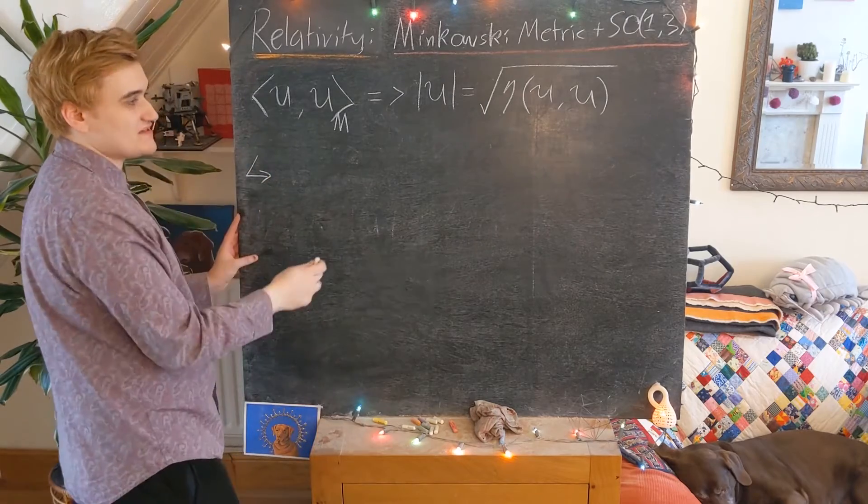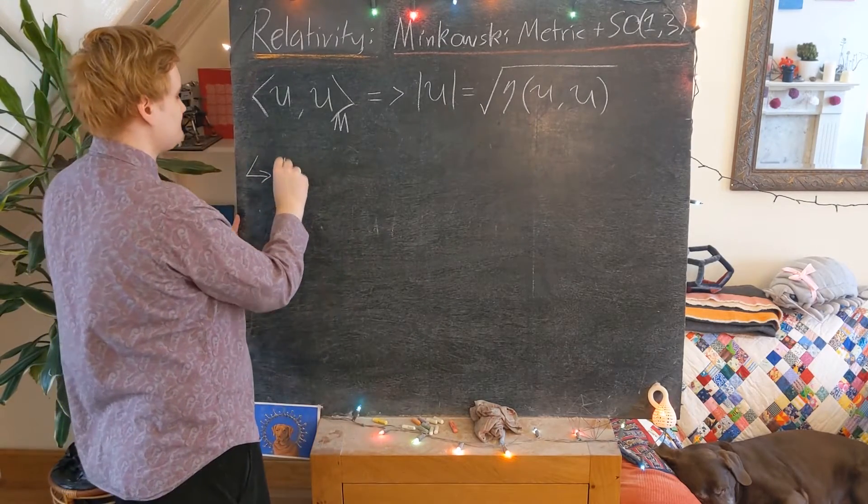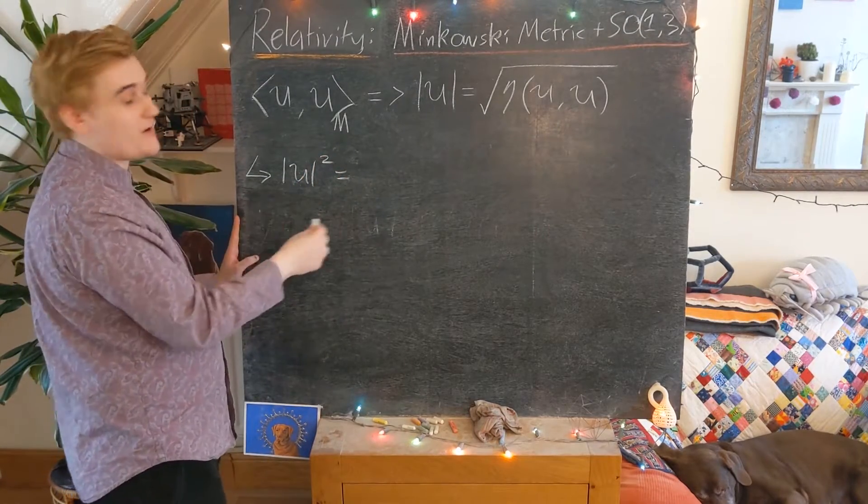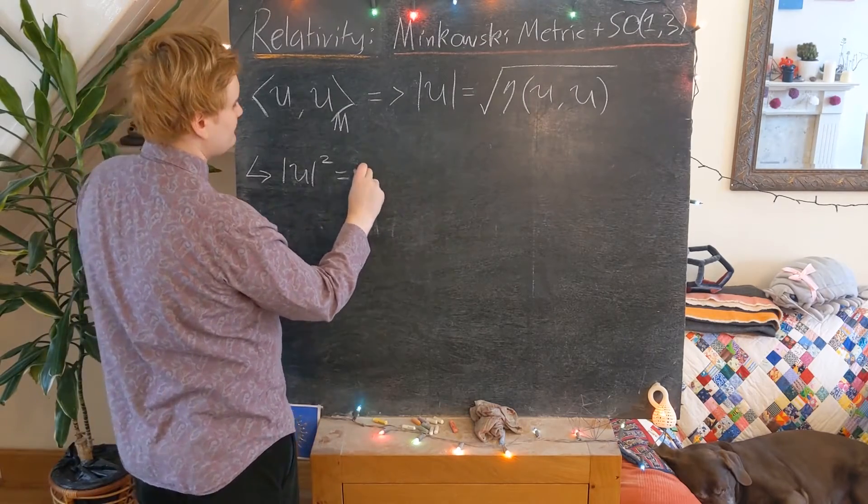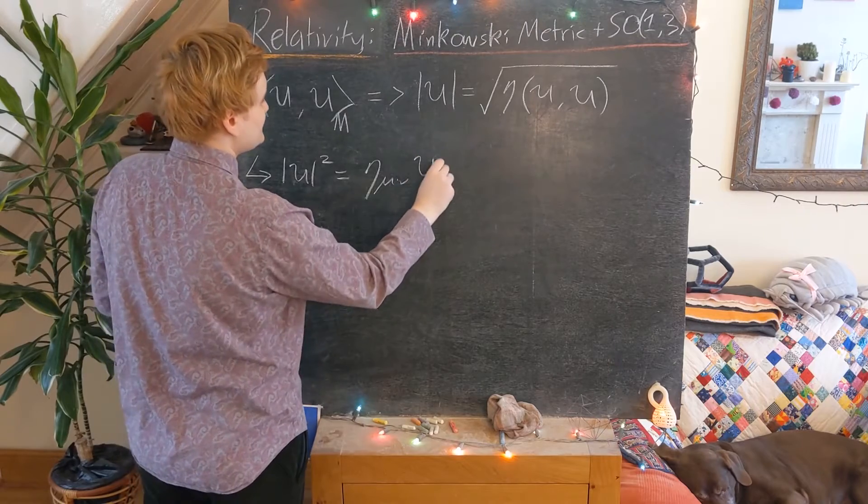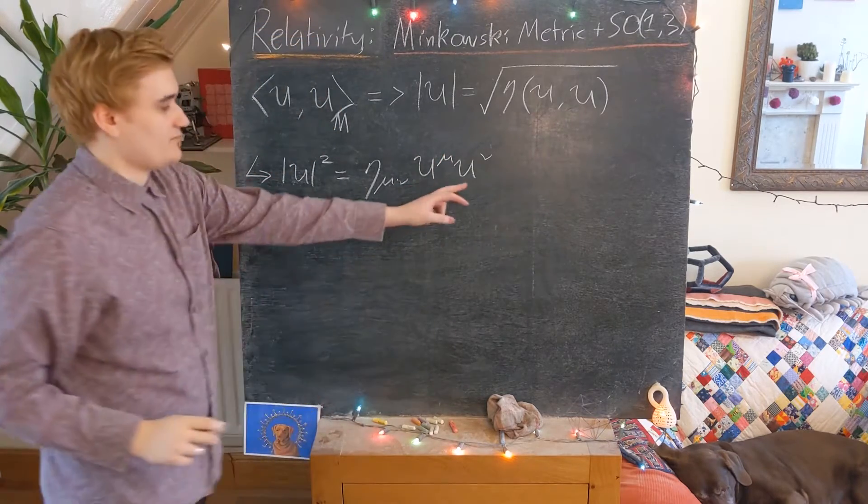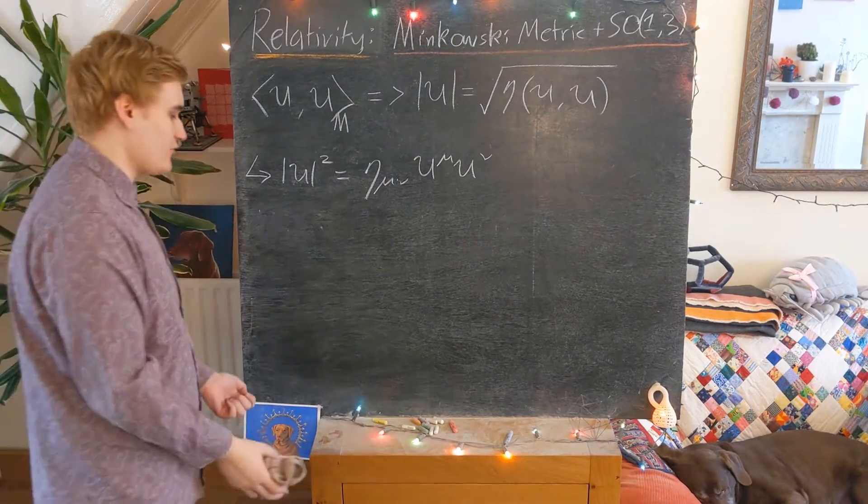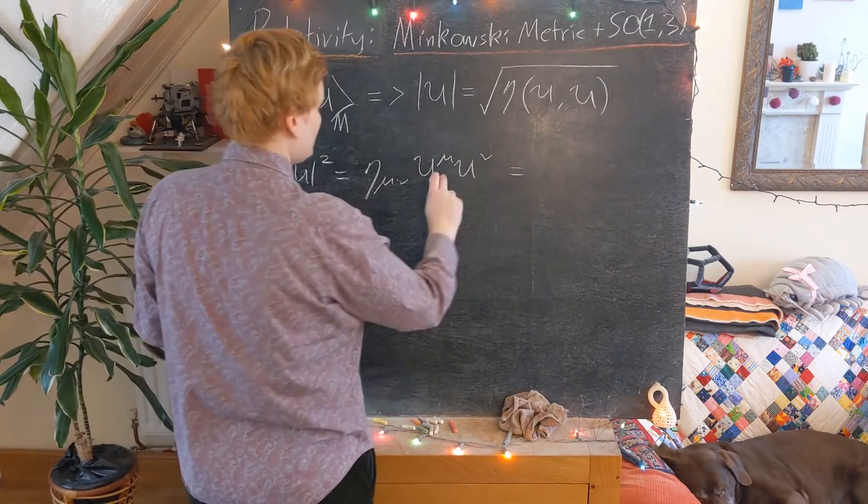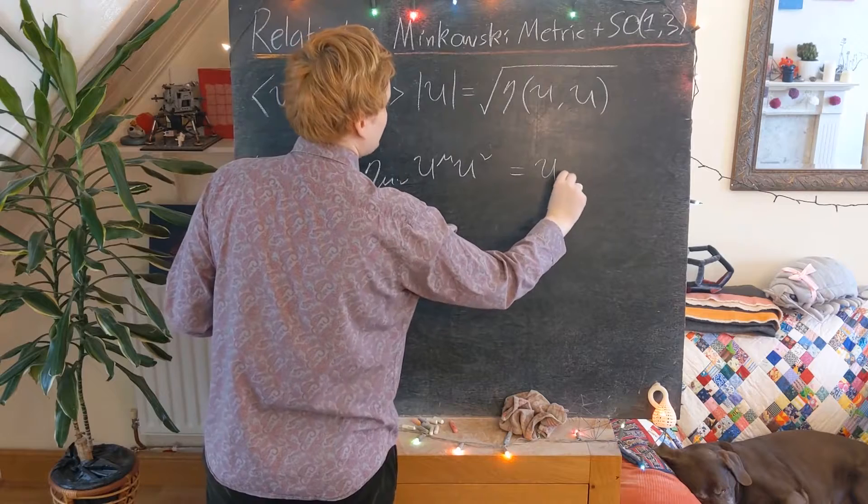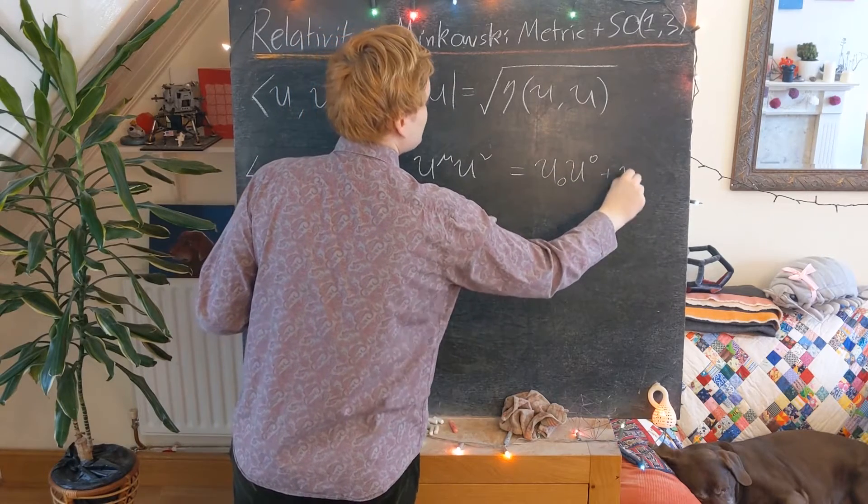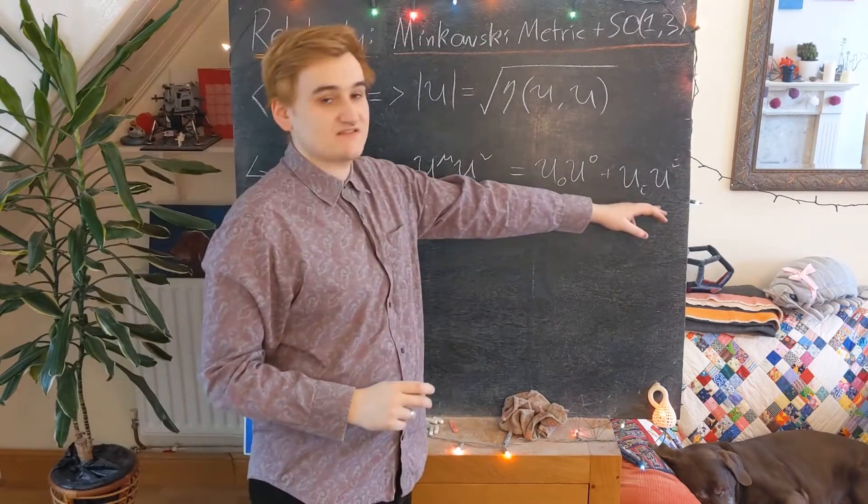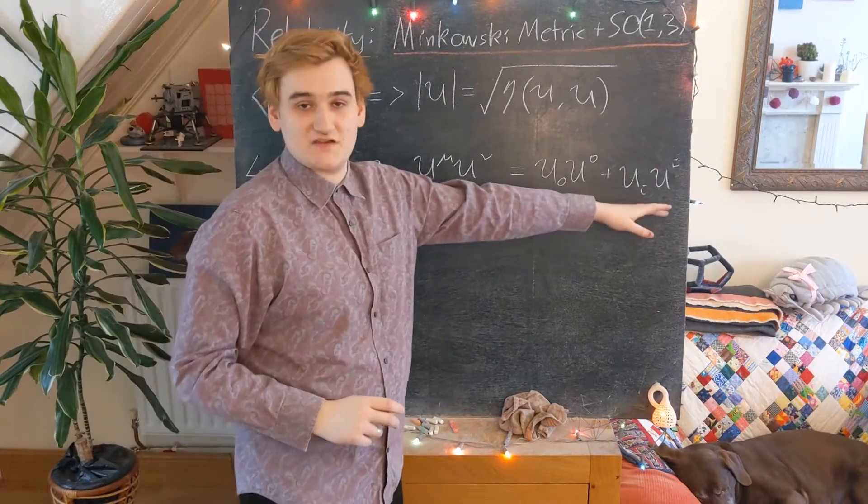And so of course, in Minkowski space, we know the metric components. And so we can see that any vector, its norm squared, is going to be given by some set of coefficients multiplying our vector components. And we can now write and express this in a number of ways. If you remember, I can just lower one of these indices and realize this is being the object u₀u⁰ plus uᵢuⁱ. Just kind of separating our time and spatial pieces.